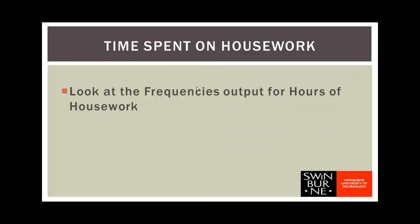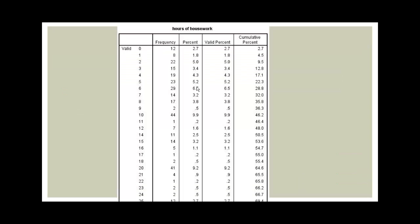Let's have a look at another variable - time spent on housework. We'll start by looking at what the frequencies procedure output would look like for this variable. First we'd get a frequency table, and that frequency table is so big it doesn't even fit on the page. Looking at that table doesn't give us any sort of impression of what the distribution of hours of housework looks like.